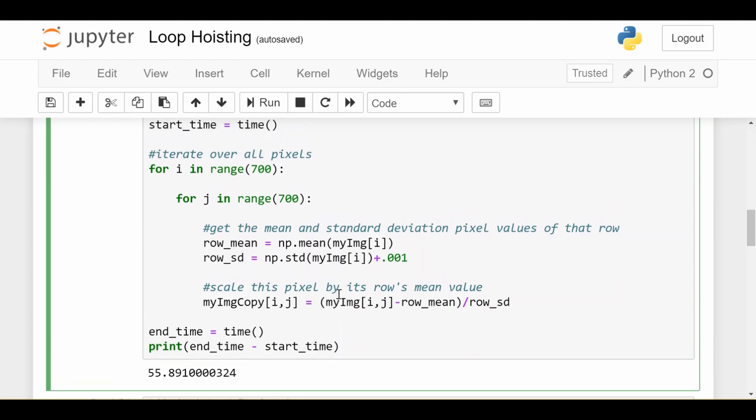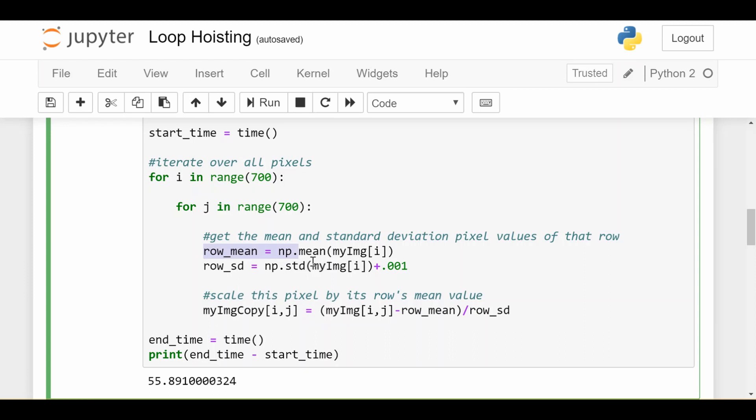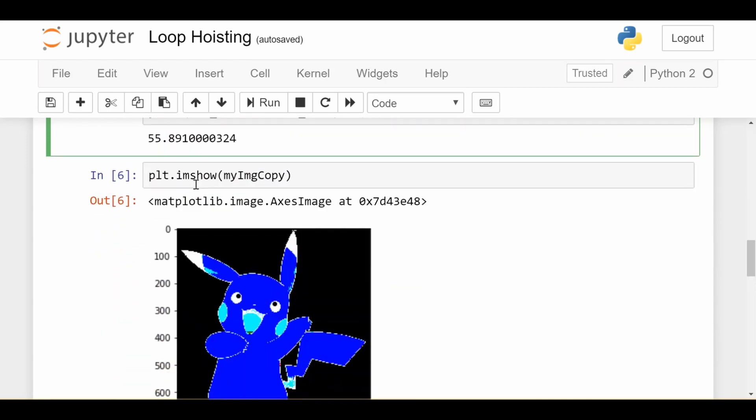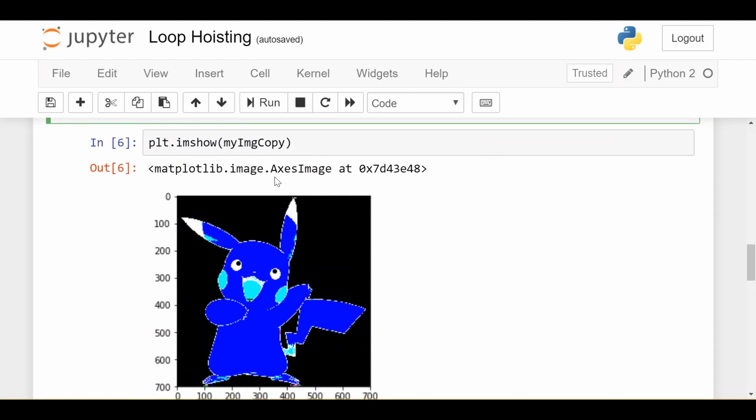Now remember, there's a big inefficiency here. When we calculate the row mean and row standard deviation, they're only functions of i. Yet I'm calculating them for every single j even when i is fixed. So in the first iteration when i is 0, then j goes from 0 to 699. I'm calculating row mean and row standard deviation this 700 times even though I only had to calculate it one time once my i was 0. So that's where we're going to speed it up. And just before I go to the speed up, if we show what that image looks like, it looks like this. So it looks kind of like a negative maybe.